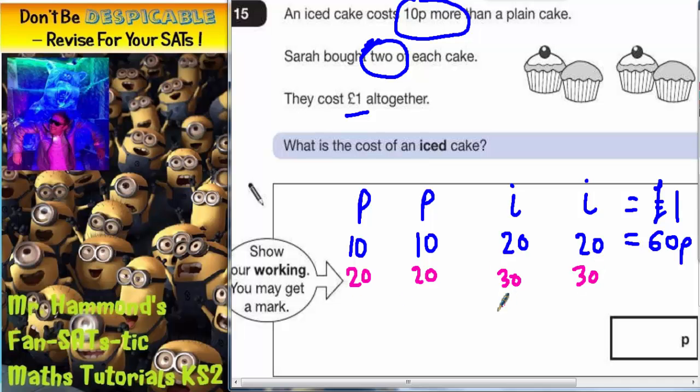Now let's check the prices. So 20 plus 20 is 40p, plus 30 is 70p, plus 30 again is a pound. And that is basically what we're looking for.